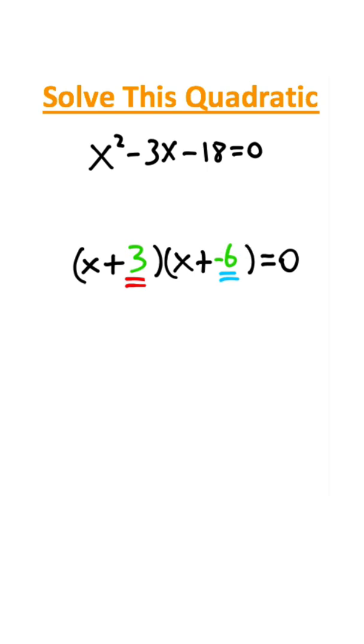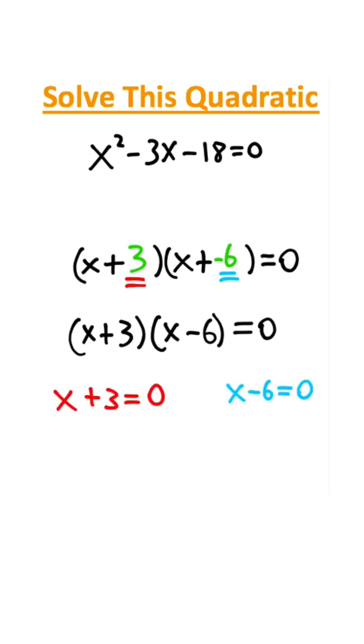And I'm going to change this x plus negative 6 to an x minus 6. If I want to actually solve it from here, what I can do is take both of the expressions in parentheses and set them equal to 0. Now if I simultaneously solve both of these at the same time, I get x equals negative 3 and x equals 6. So those are my two roots right there.